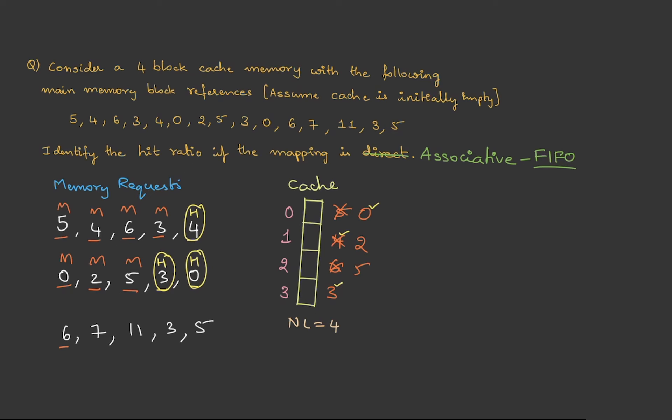The next is 6. 6 is not available, so 6 will be placed over here. This is a miss. Then 7, miss. Then 11, it is a miss. Then 3, miss. Then 5 is also a miss.